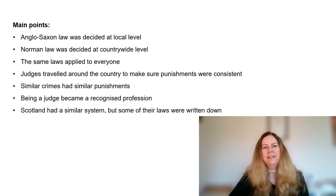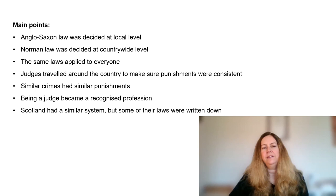Here is a brief summary of the main points. Anglo-Saxon law was decided at local level. Norman law was decided at country-wide level — the same laws applied to everyone. Judges travelled around the country to make sure punishments were consistent. Similar crimes had similar punishments. Being a judge became a recognised profession. Scotland had a similar system to England, but some of their laws were written down.